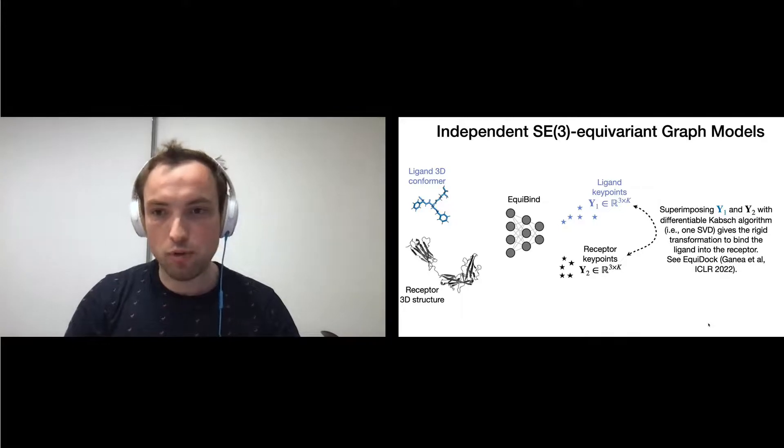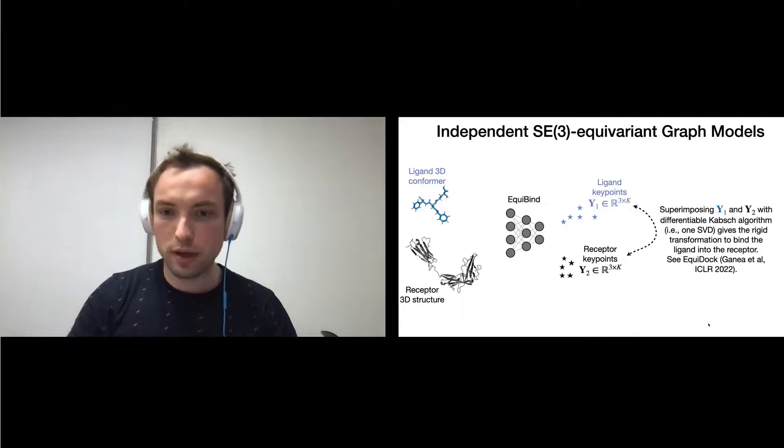After that, we can superimpose Y1 and Y2 with a differentiable Kabsch algorithm to recover a rigid transformation to bind the ligand into the receptor.